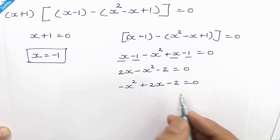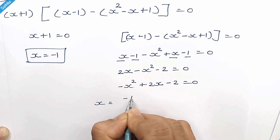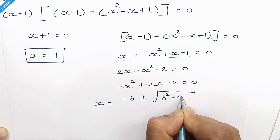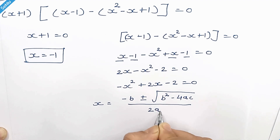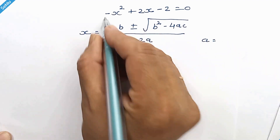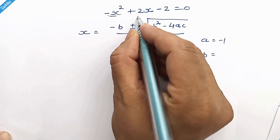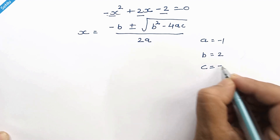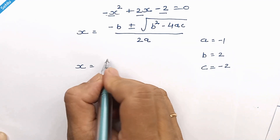Now it's a quadratic equation. As per the standard quadratic formula, x equals negative b plus or minus square root of b squared minus 4ac, all over 2a. Here a is negative 1, b is 2, and c is negative 2.